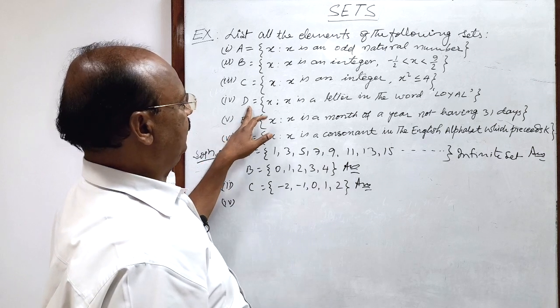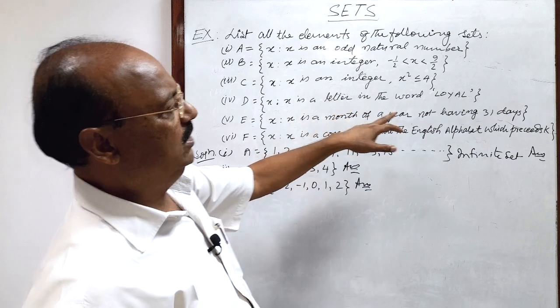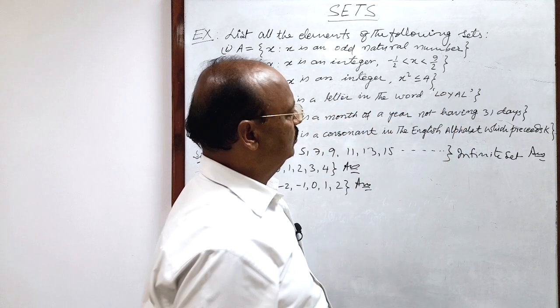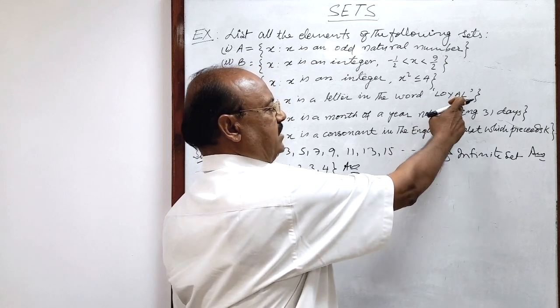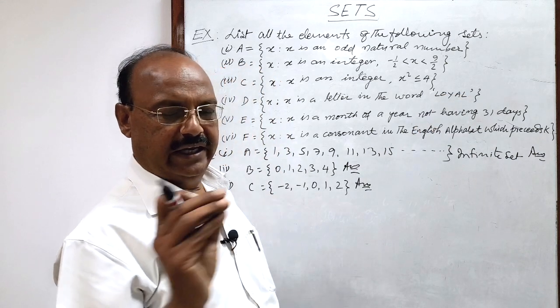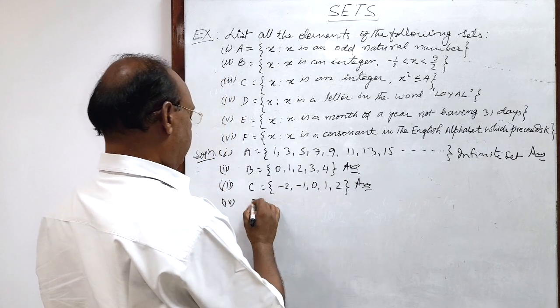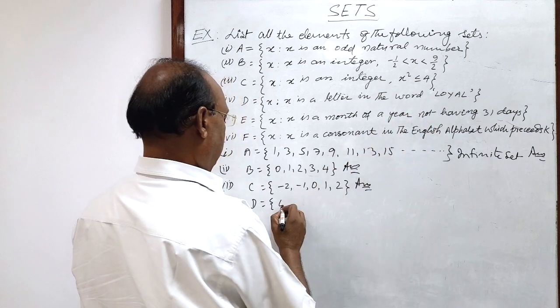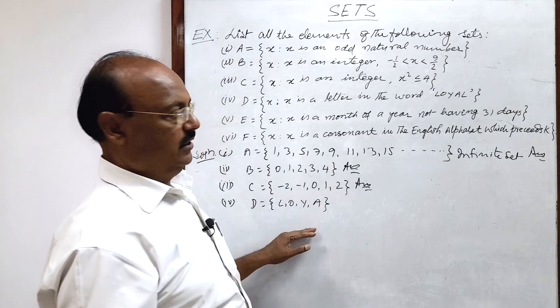And fourth part of this question, set d consisting of element x such that x is a letter in the word loyal. Okay, here we have to see carefully that l is repeated twice here, in the beginning as well as at the end. But we should write all the elements only once, only one time. So here set d will consist of the letters, consist of the elements l, o, y, a. We will not repeat l again here.